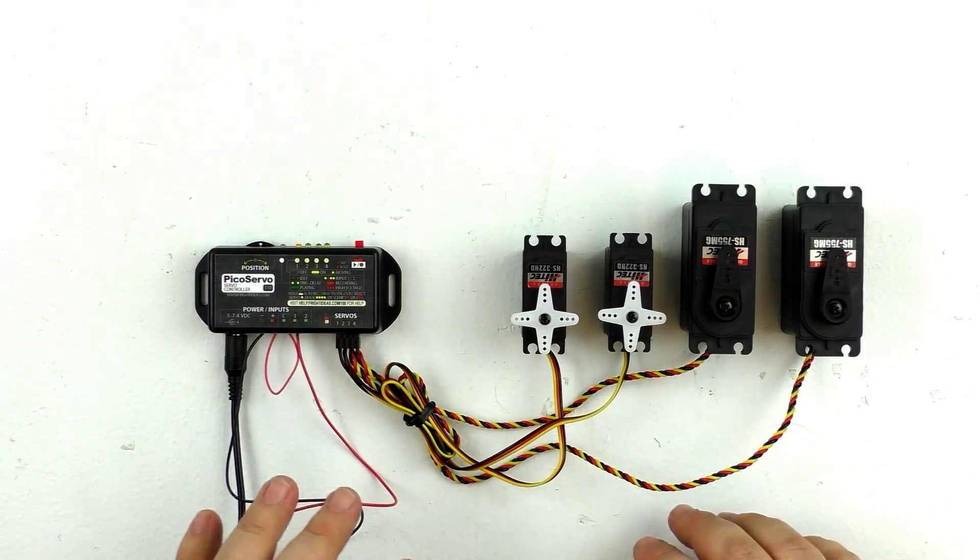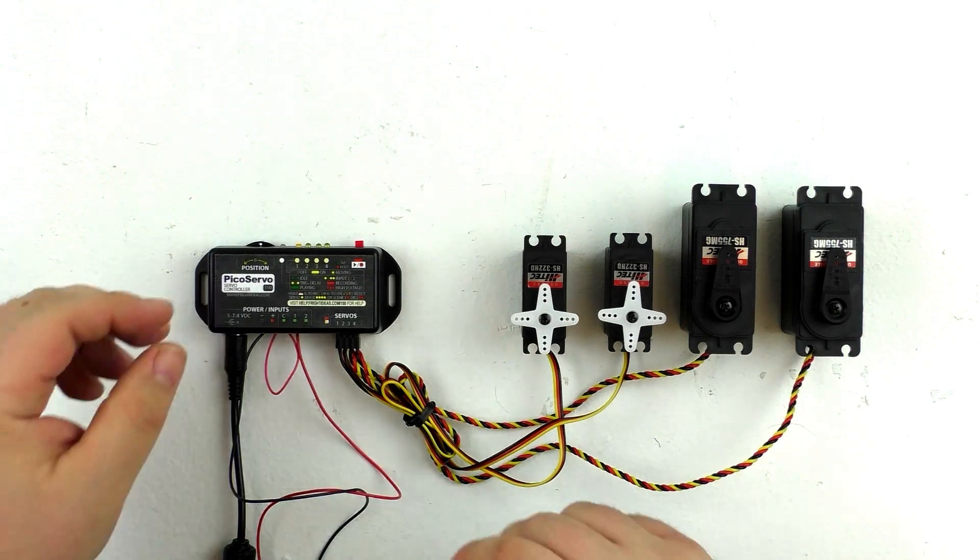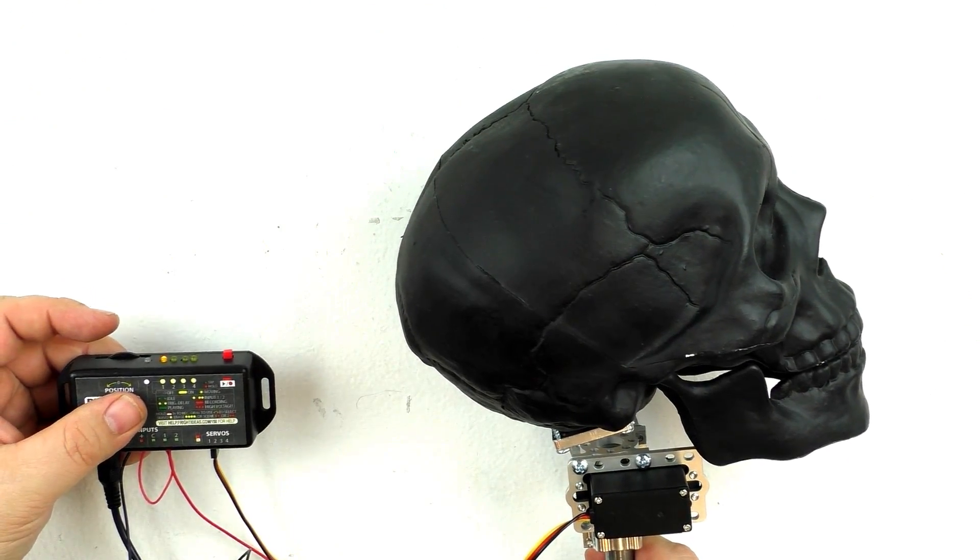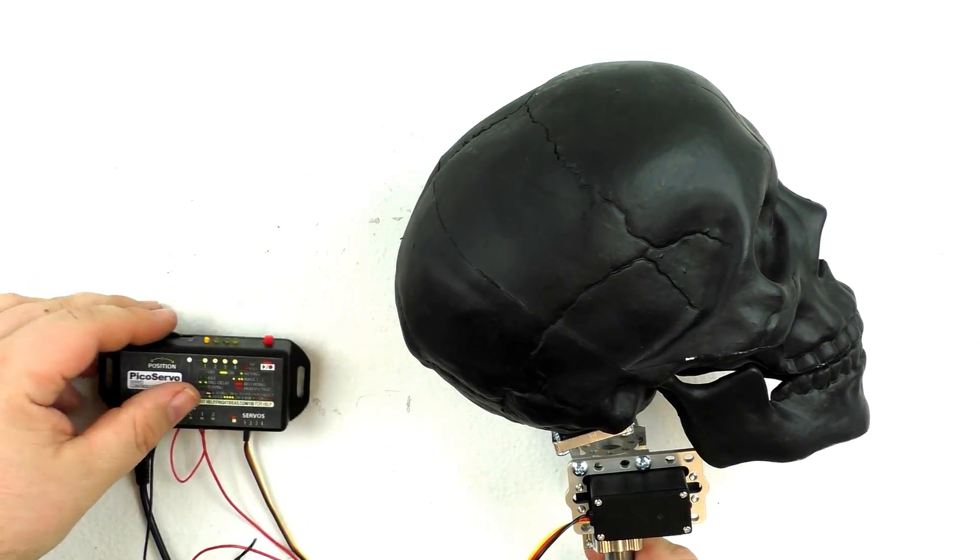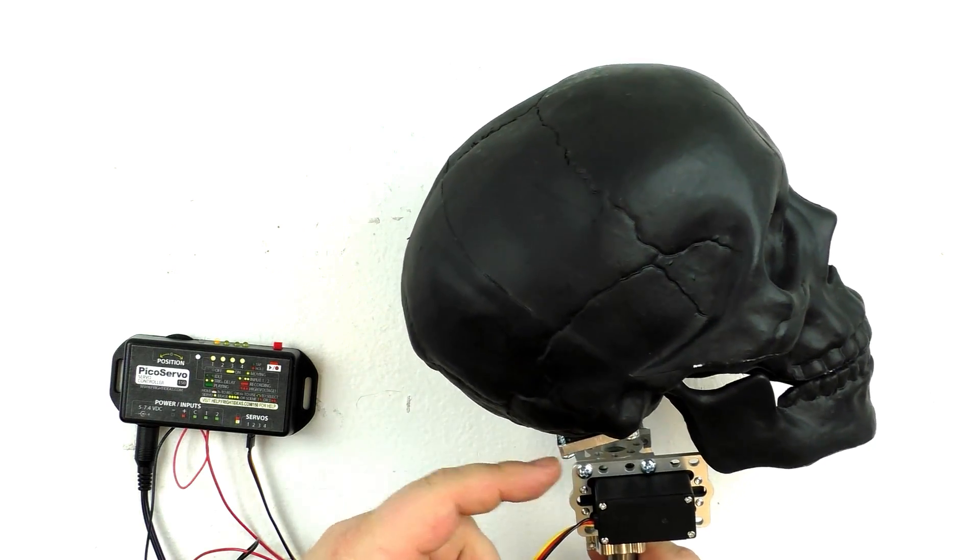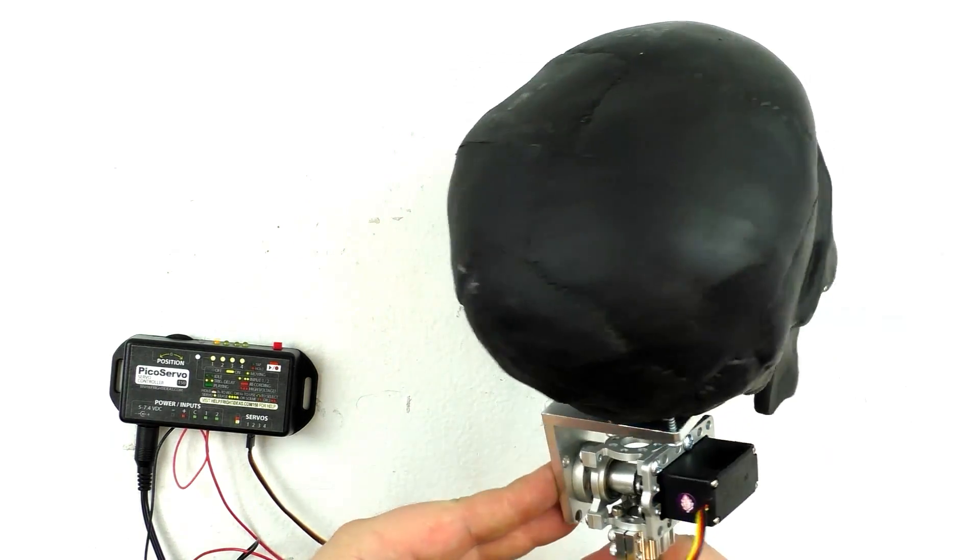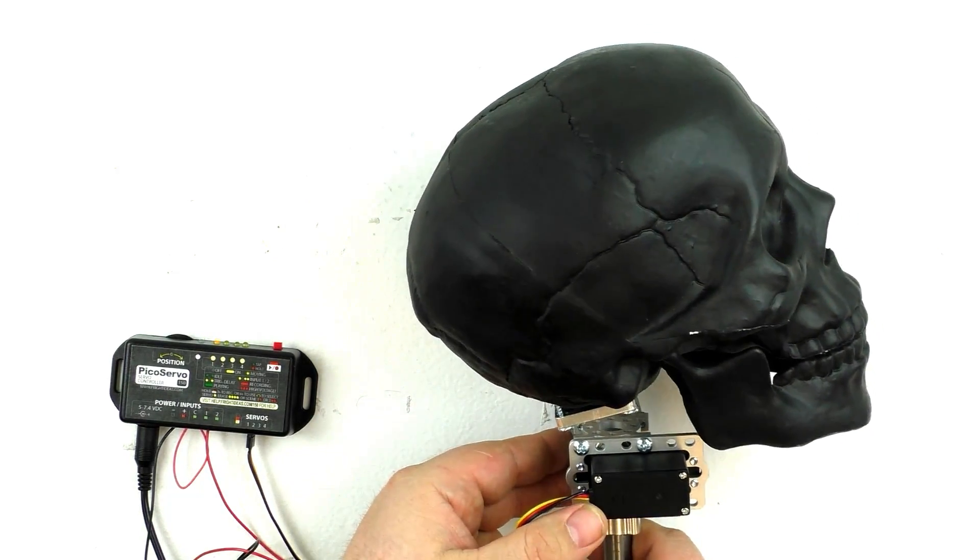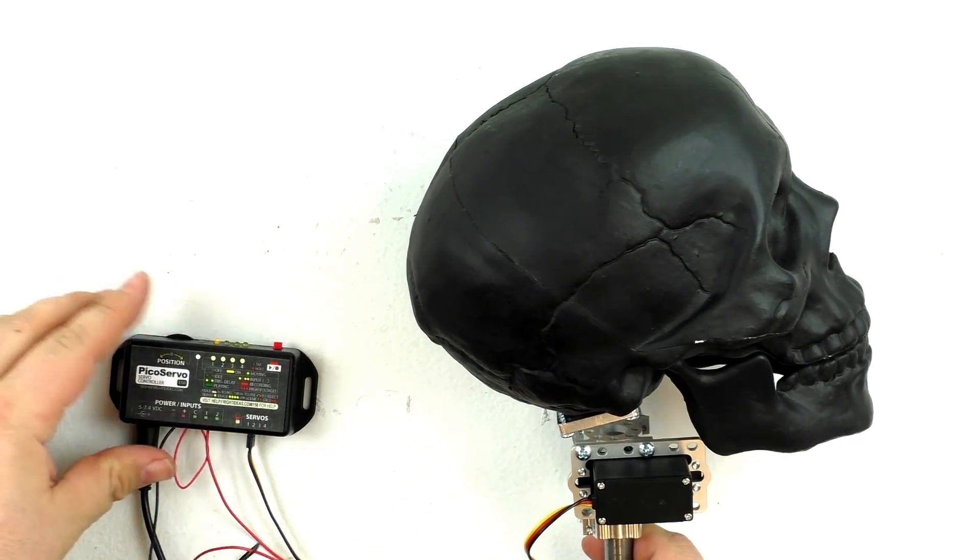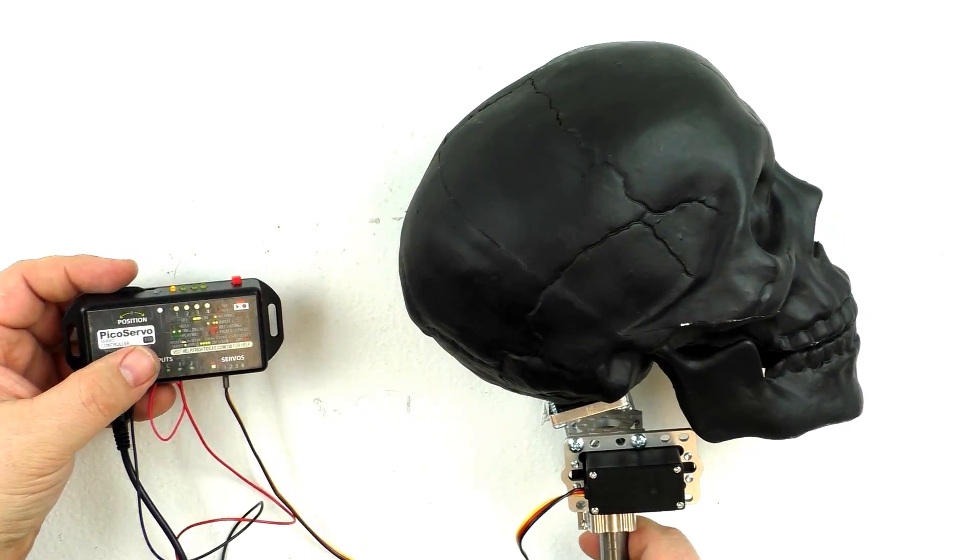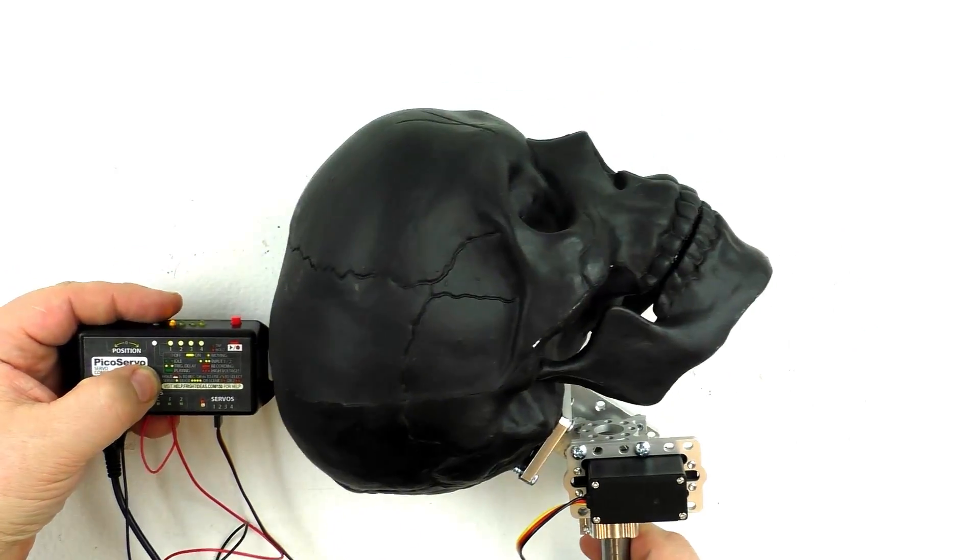Now let's check out an example of some of the cool stuff you can do with this tech. Here we have a skull that we've attached to one of our servos. We installed the servo in a servo block and then used some of our mounting hardware to attach it to the skull. I've plugged that servo into the PicoServo, and we can now actually control the motion of the skull.